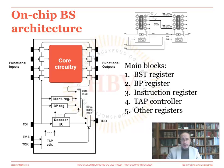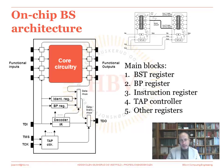Every boundary scan device will comprise four test pins. They are the test data input and test data output pins. These two pins are used to scan data in and out of the device. Also, the test mode select, which defines the operating mode of the test infrastructure, and the test clock pin. These four pins together make up what is called the test access port, or TAP for short — test access port.